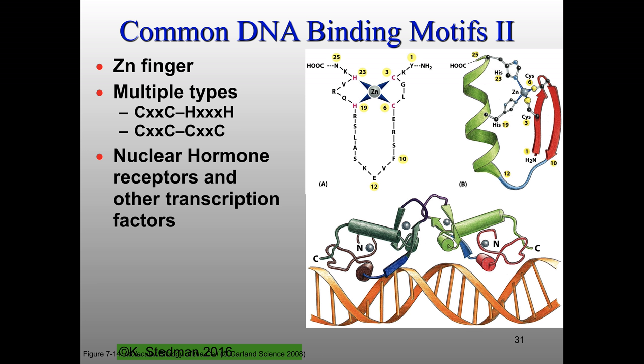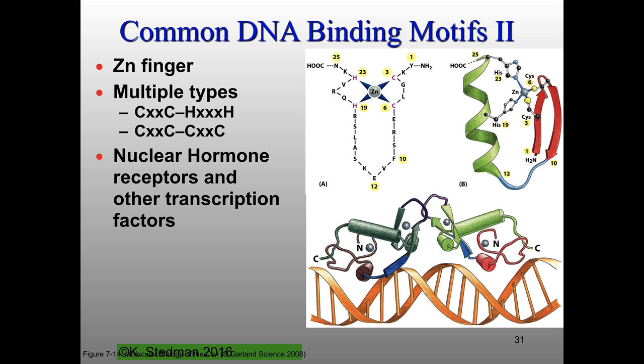Another common motif is zinc finger binding proteins, which, as the name implies, have a zinc residue coordinated into the center. There are many types of these. The amino acids that interact with the zinc are typically in a motif like cysteine-XX-cysteine and then on the other side histidine-XXX-histidine, or it can be all cysteines. There are several examples of these that are nuclear hormone receptors and other transcription factors.